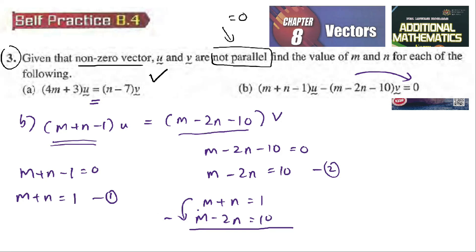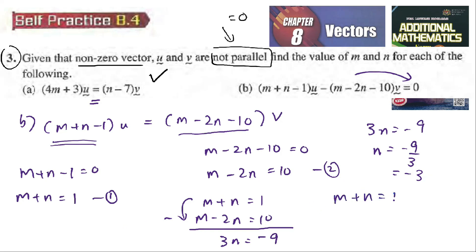So three n equals negative nine, and n equals negative nine divided by three, which gives n equal to negative three. Then substituting back, m plus negative three equals one, so m minus three equals one, and m equals one plus three, which equals four.